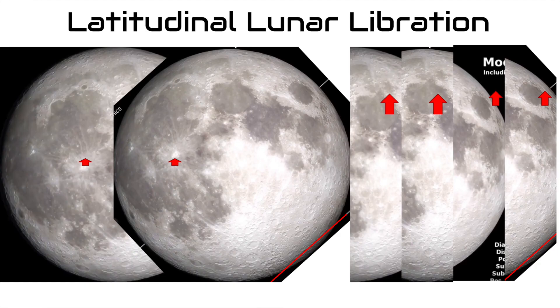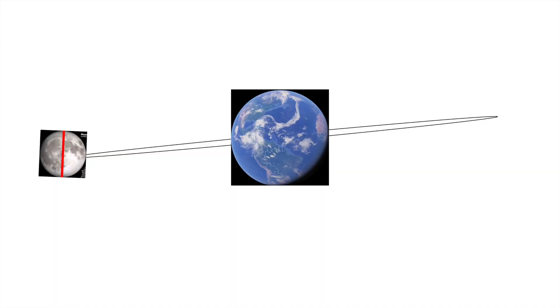Next is latitudinal lunar libration. Latitudinal libration is the up and down rotation of the moon. Why would the moon rotate up and down? This stems from the fact that the moon rotates on an axis that is 6.7 degrees tilted to the moon's orbit.